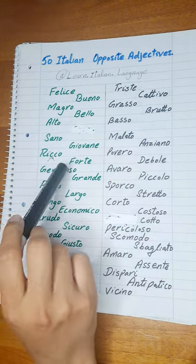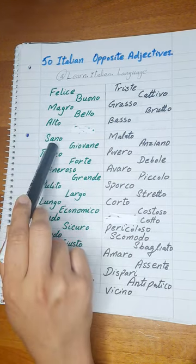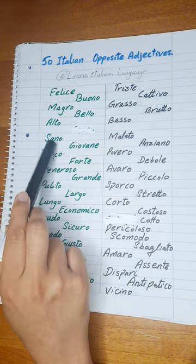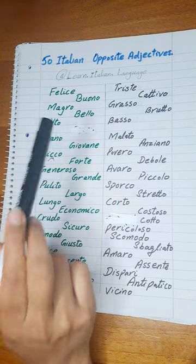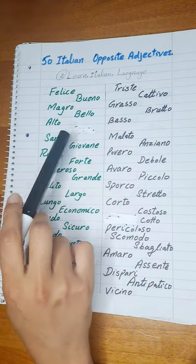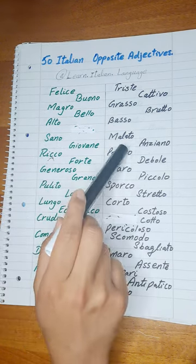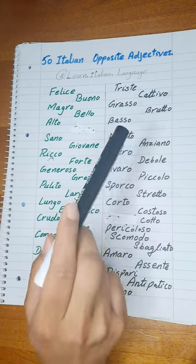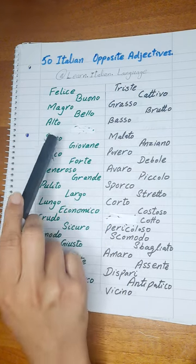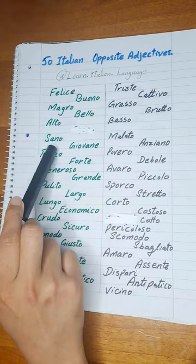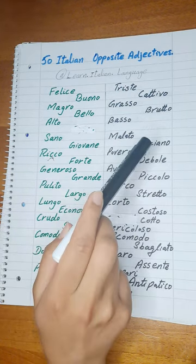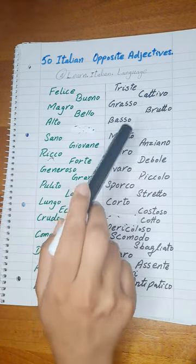Next is Sano. Sano means healthy. The opposite of Sano is Malato. Malato means sick. Sano — healthy. Malato — sick.